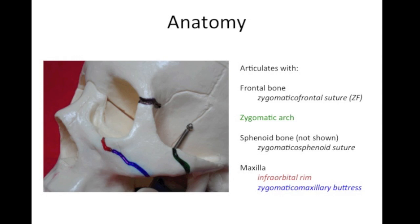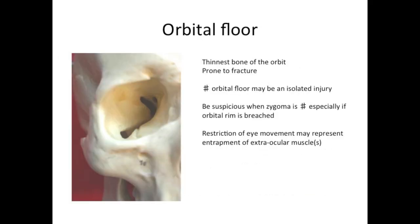There have been several attempts to classify zygomatic fractures and most are based on the location of the fracture sites — it is worth looking these up. The orbital floor is the thinnest bone of the orbit and is therefore the most commonly fractured bone of the orbit. A blow to the globe itself may cause an orbital floor fracture, the classic injury being a squash ball travelling at speed which hits the front of the globe and fractures the orbital floor. Orbital floor injuries may occur in combination with zygomatic fractures, especially if the infraorbital rim is breached.